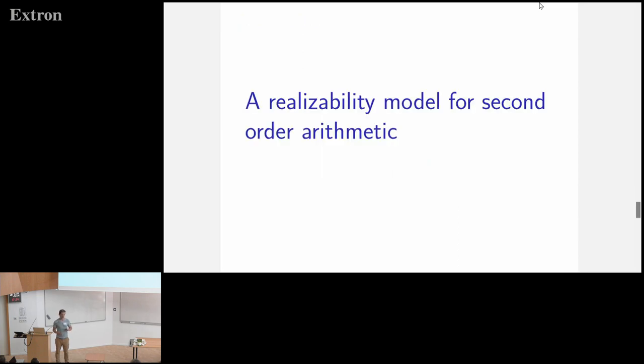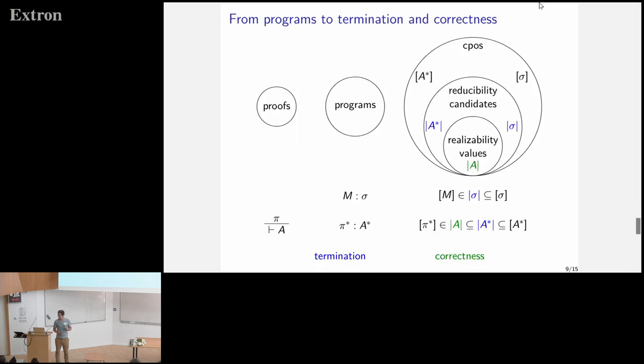Just very quickly, what does this model look like? You have proofs at the beginning. Then these proofs, you interpret them as programs, programs that contain update recursion, a variant of bar recursion. And then you have its semantics in complete partial orders, which is quite standard. Then for each complete partial order, you can look at only reducibility candidates, which are a subset of the image of terminating programs. And then inside this, you can define realizability values, which carry not only termination but also correctness with respect to the logic. That's the rough idea of the model.